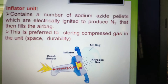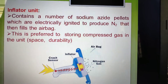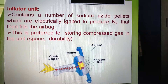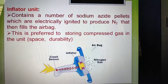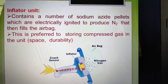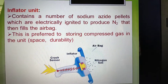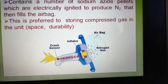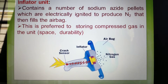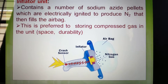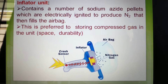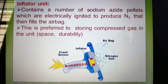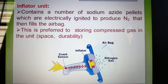The most important unit in the airbag is the inflator unit. It contains a number of sodium azide pellets which are electrically ignited to produce nitrogen gas that then fills the airbag. This is preferred over storing compressed gas due to space and durability considerations. In the inflator unit, the crash sensor can be identified by the yellow sign at the center, where nitrogen gas is produced to fill the airbag with compressed air.